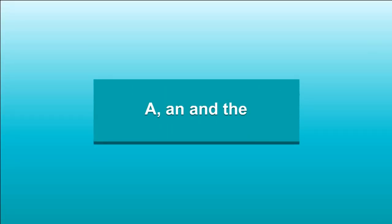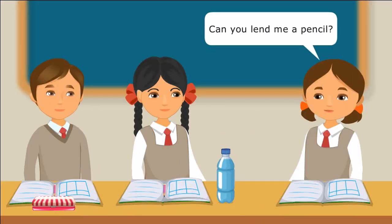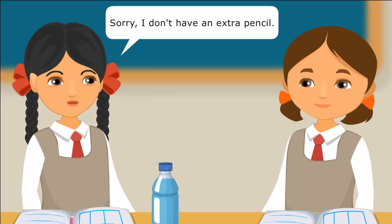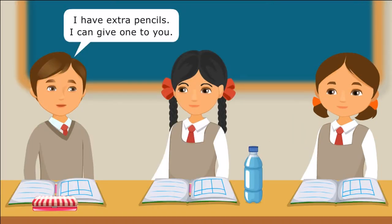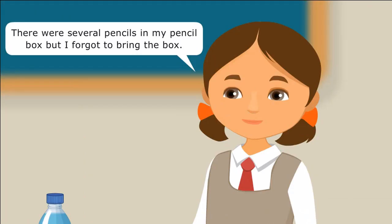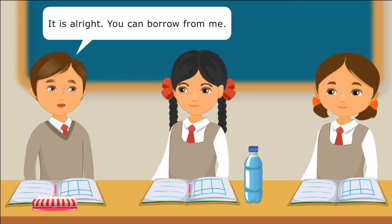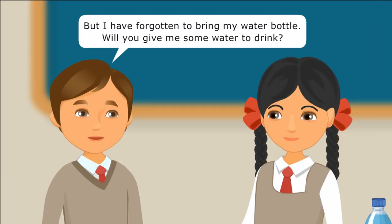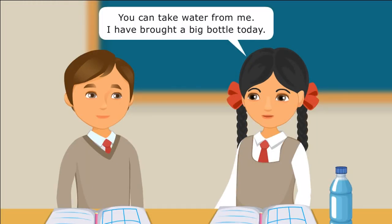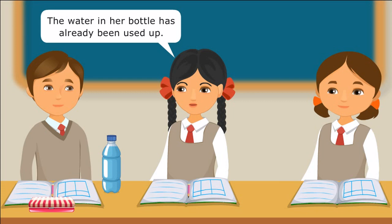A, an, and the. Can you lend me a pencil? Sorry, I don't have an extra pencil. I have extra pencils — I can give one to you. There were several pencils in my pencil box, but I forgot to bring the box. It is all right, you can borrow from me. But I have forgotten to bring my water bottle. Will you give me some water to drink? You can take water from me. I have brought a big bottle today. The water in her bottle has already been used up.